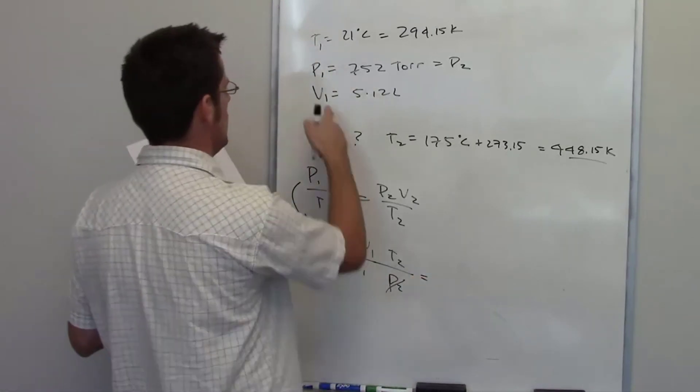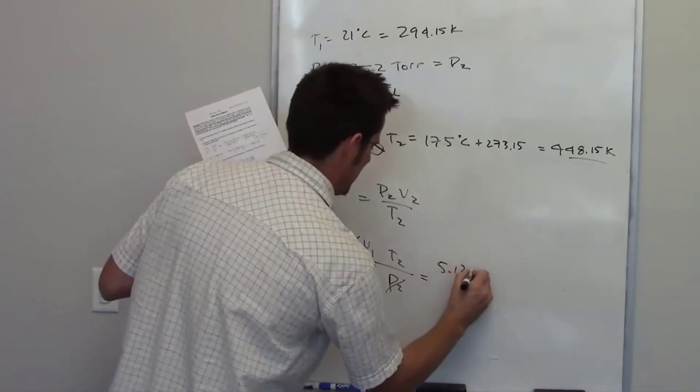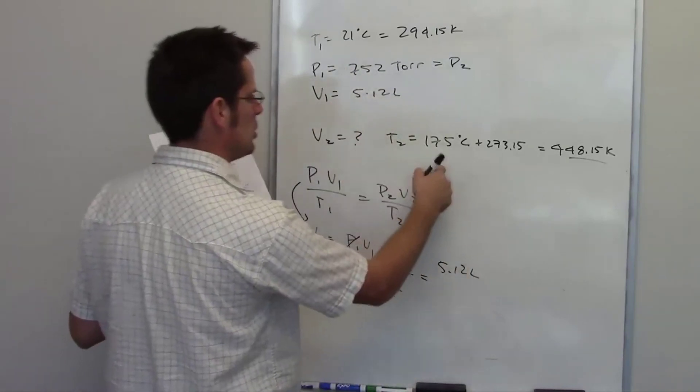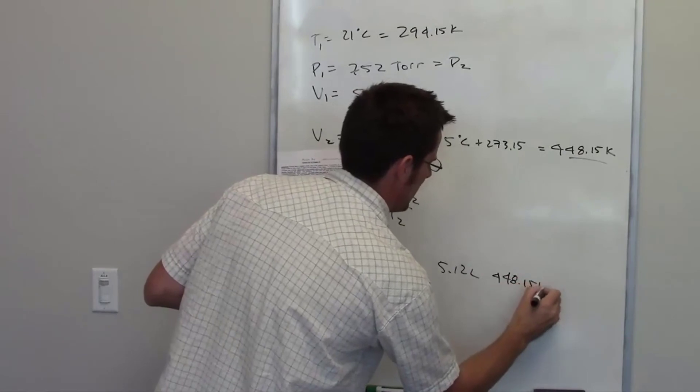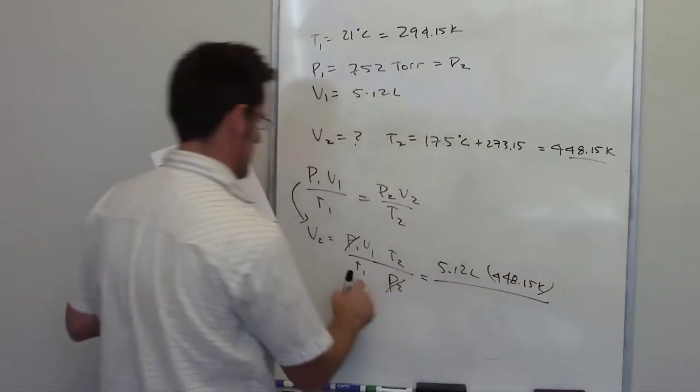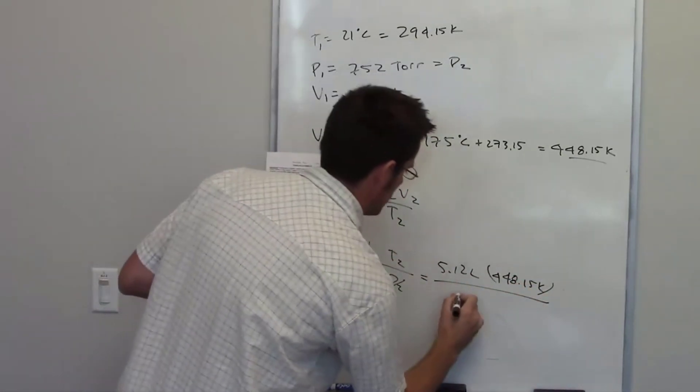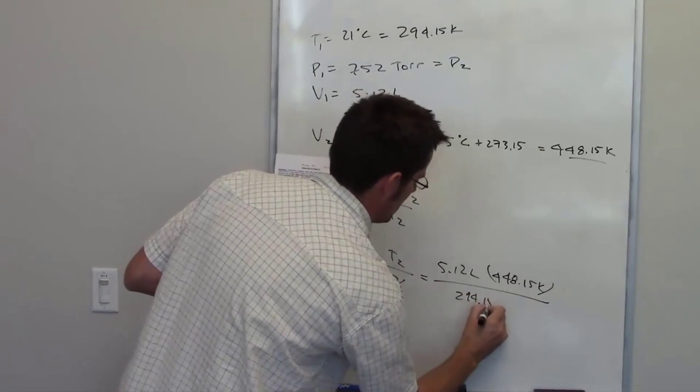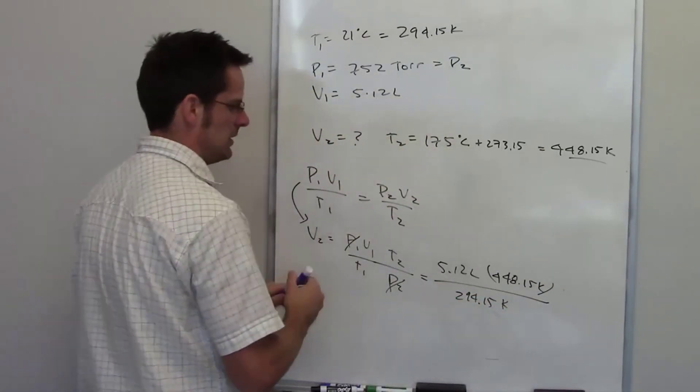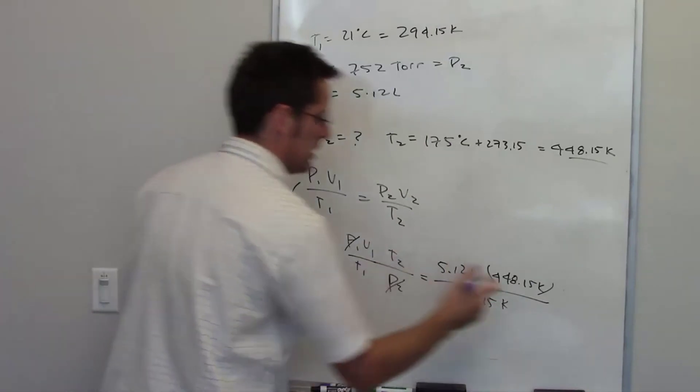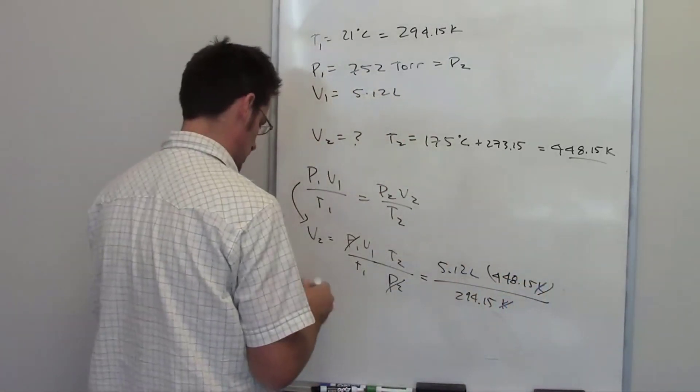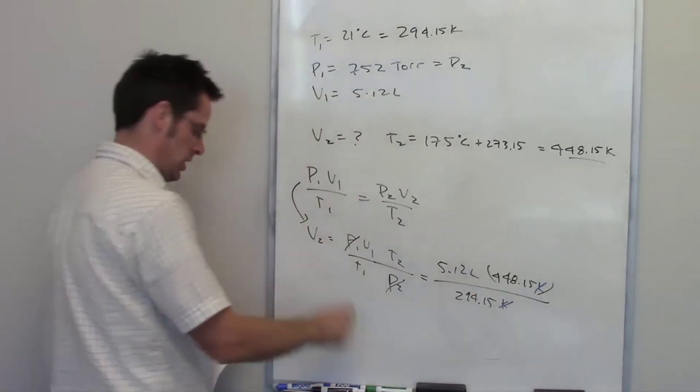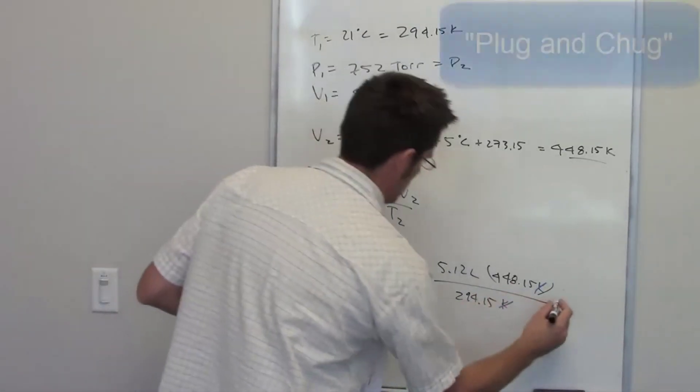So what I have left then is V1, 5.12 liters, multiplied by T2, which is 448.15 Kelvins, divided by T1, which is 294.15 Kelvins. The units should all cancel each other out, leaving me behind the units that I want. The Kelvins do cancel each other out, and they leave me behind units of liters. That is a correct unit for volume, so everything should be okay. Now it's just plug and chug.